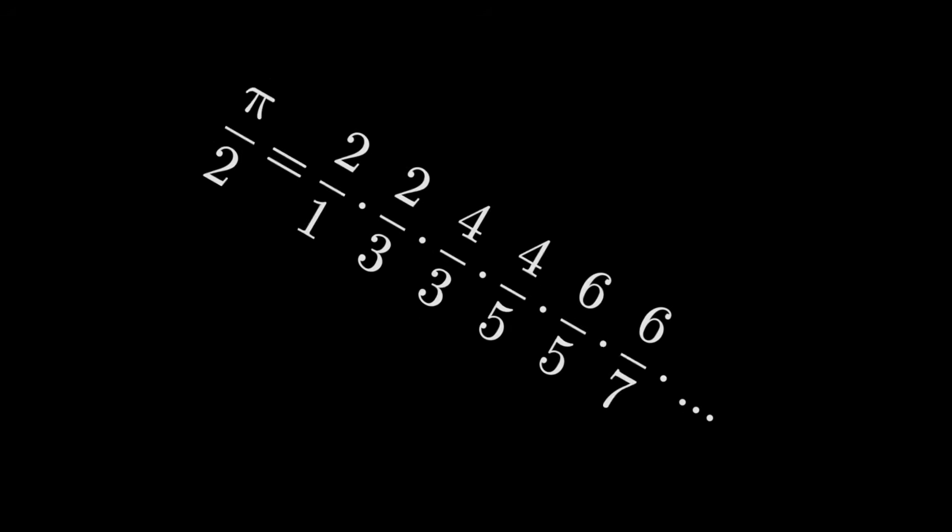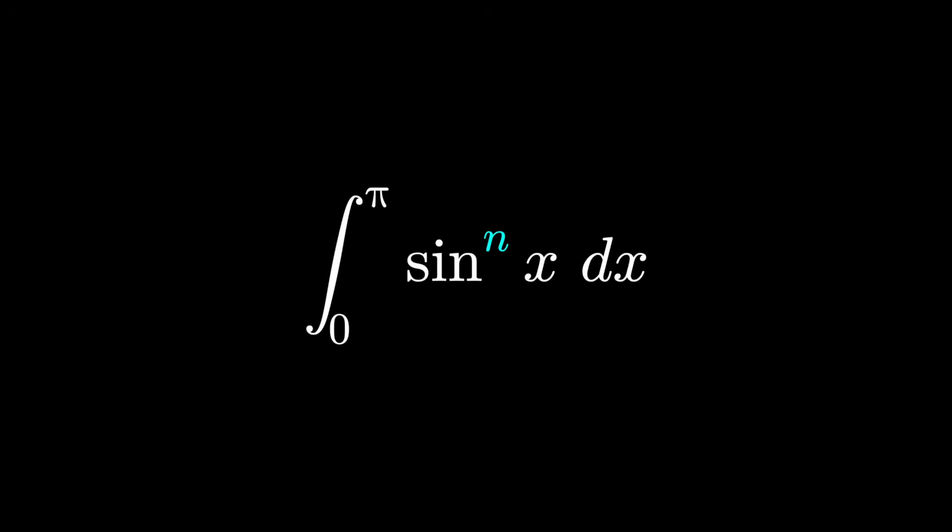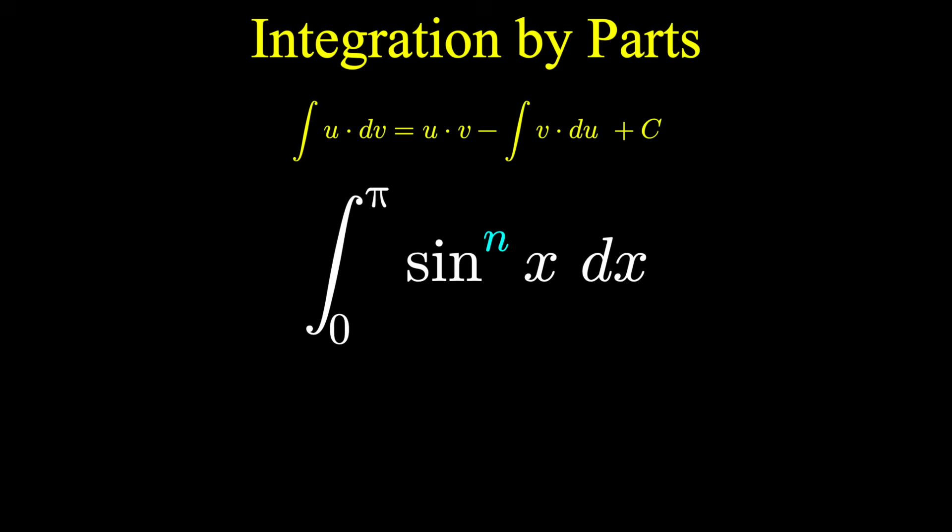One way is to examine the definite integral from zero to pi of sin^n(x). Now we don't know whether n is odd or even, we'll get to that in a moment, but we can use integration by parts nonetheless to come up with a recursive formula.